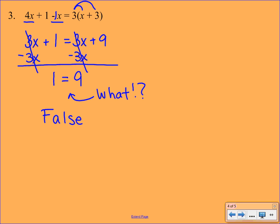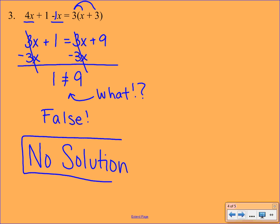When the variables drop out and you're left with what's considered a false statement because 1 is definitely not equal to 9. In fact, put a slash right through that equal sign. That is not true. That just means there is no solution. There is no possible x value that will satisfy this equation. So just to recap here. If your variables drop out and you have a false statement like this, it is just no solution. There's no way to solve this. You don't have to do any more work than that.